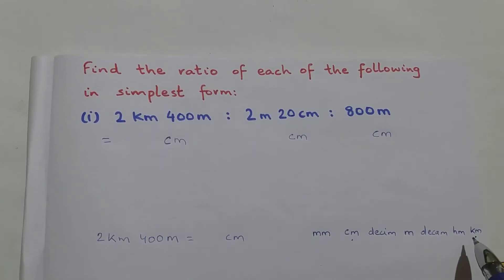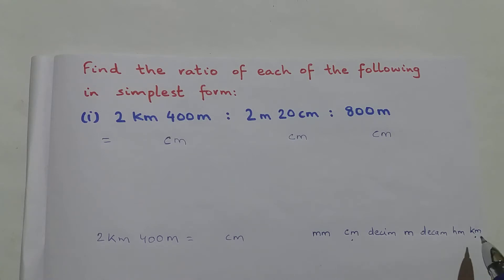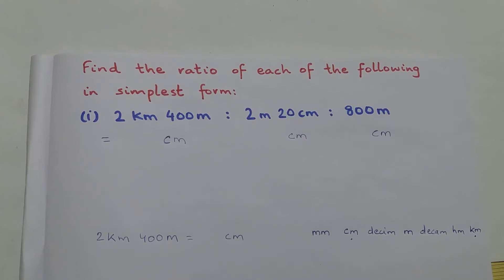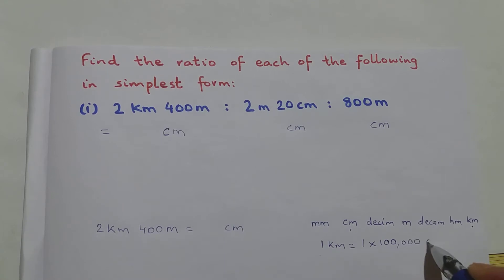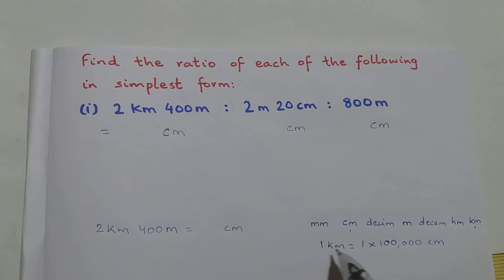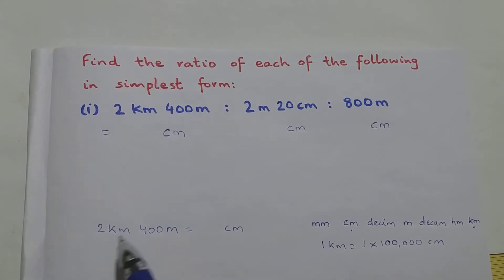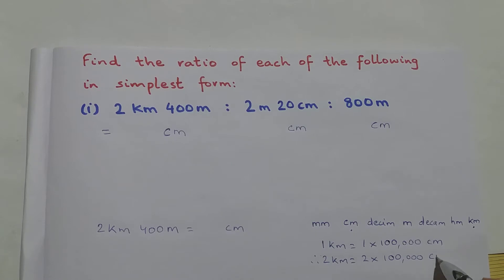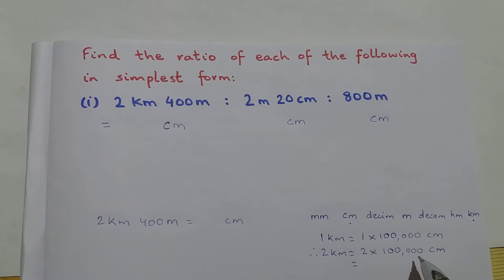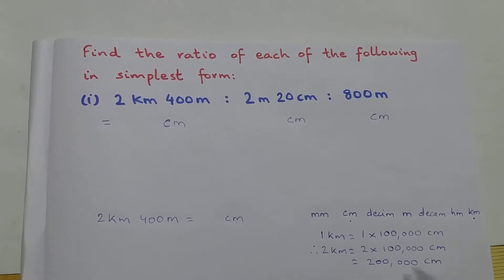In order to convert kilometers to centimeters, I have to multiply by 10, 100, 1000, 10,000, 100,000. So to convert kilometers to centimeters I have to multiply by 100,000. Therefore 1 kilometer is 1 × 100,000 centimeters, and 2 kilometers will be 2 × 100,000 = 200,000 centimeters.